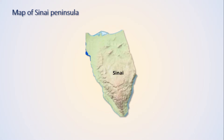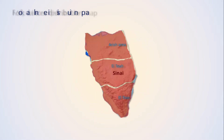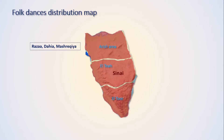Sinai consists of three different areas: North Sinai, which we call the Arish area; the middle of Sinai, which we call Al-Tea; and South Sinai, which we call Al-Tour. Looking at the distribution map of dances, we start in the Arish area, where we have Al-Raz'a, Al-Dah'ya, and Mashraq'ya. In the middle of Sinai we have Dah'ya and Mashraq'ya.